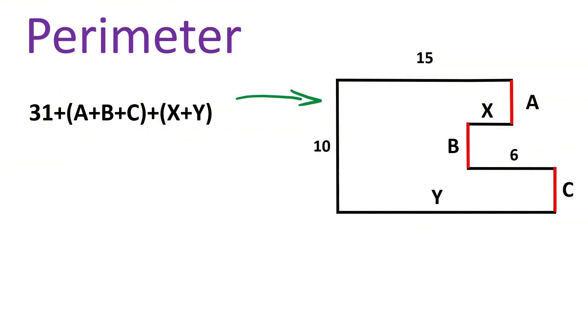Great! We can clearly notice that these three sides together make up this vertical side, and therefore we get A plus B plus C equals 10. So put it here. Therefore, the perimeter becomes 41 plus X plus Y.